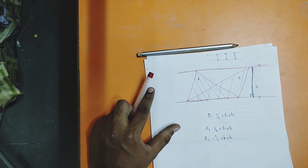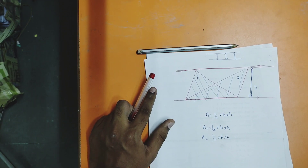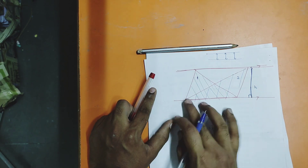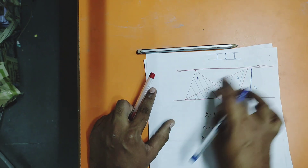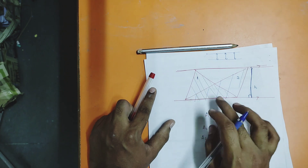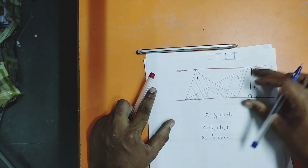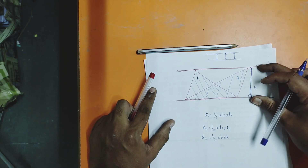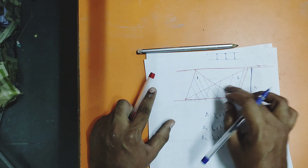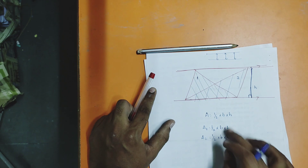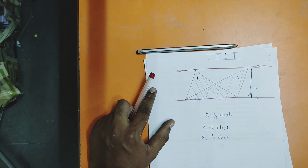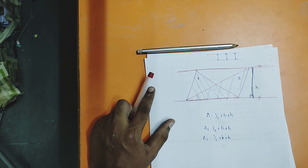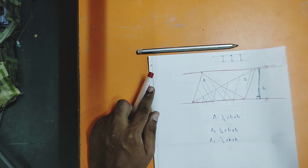The concept here is: if there are two triangles having the same base and on the same parallels, then both triangle areas will be the same. This is what we need to understand to do the BPT theorem.